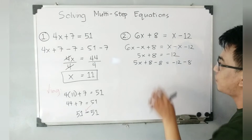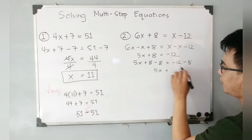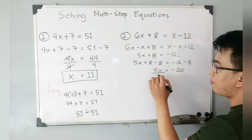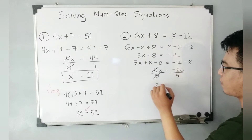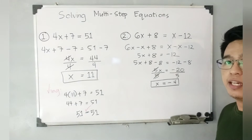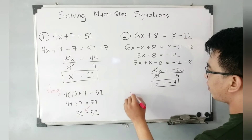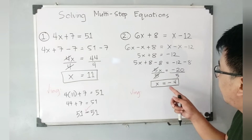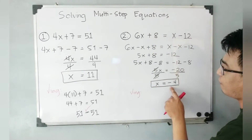We need to keep it balanced, so 8 minus 8 is 0, giving us 5x is equal to negative 20. We then divide both sides by 5, and x is equal to negative 4. This is the value of x in example number 2. As I said, we need to check whether our answer is correct. So with x equal to negative 4, I will replace the variable x with negative 4 in the original equation.